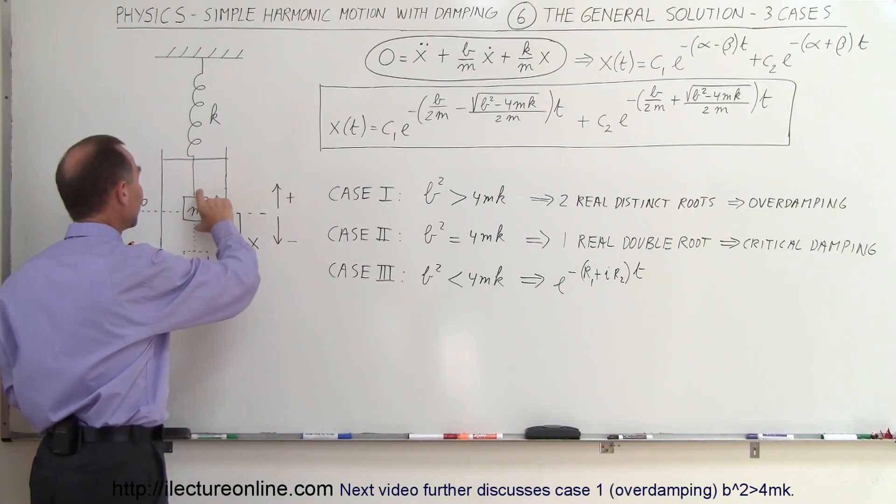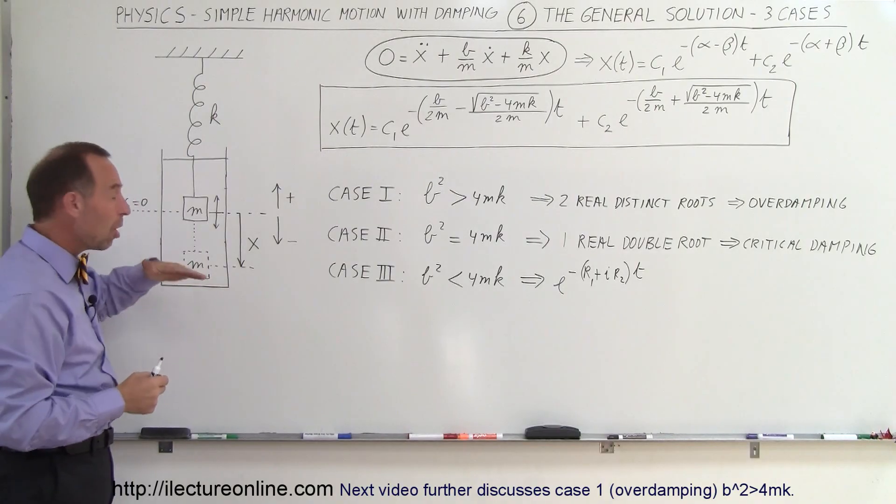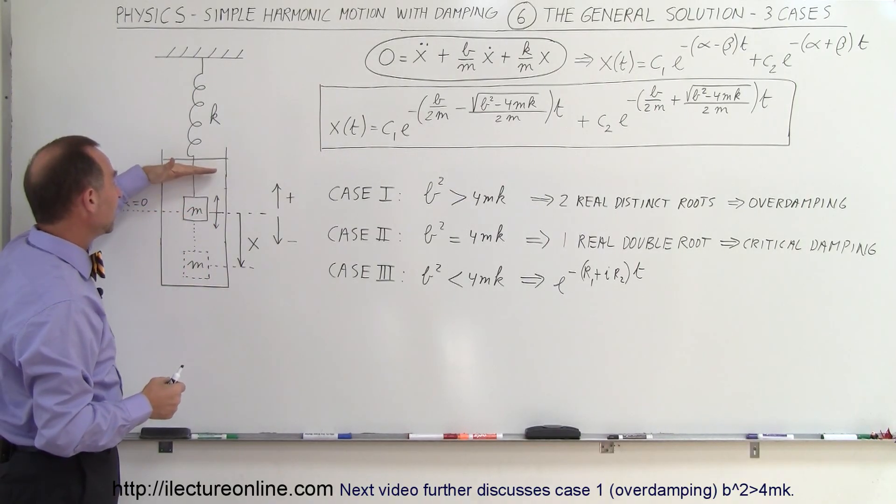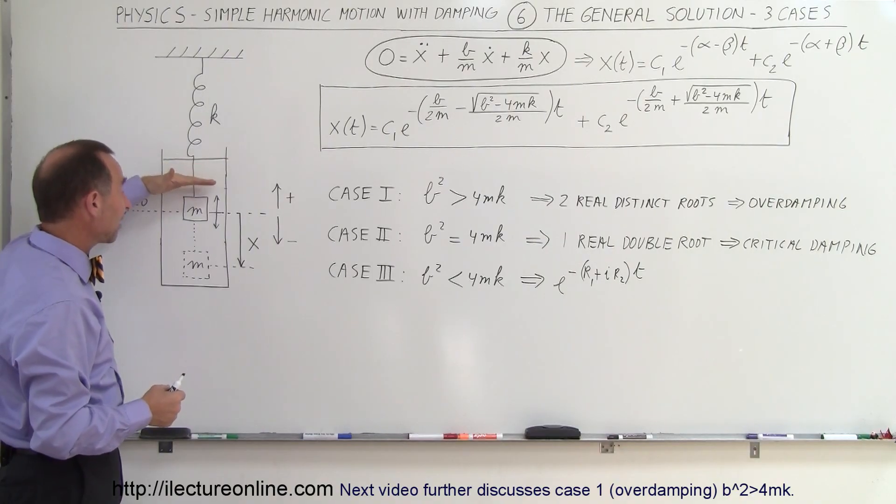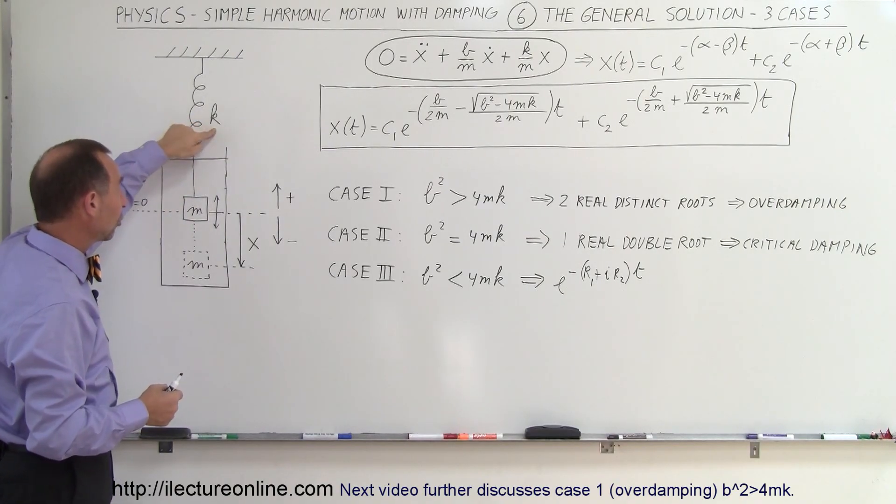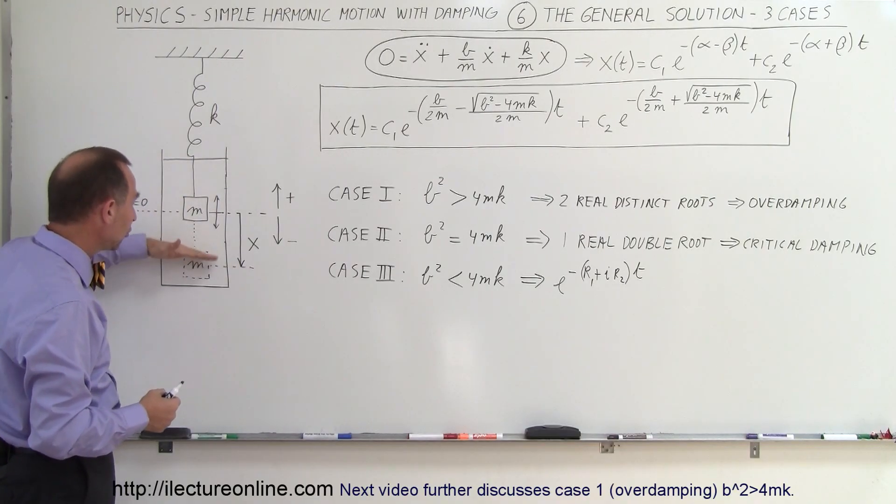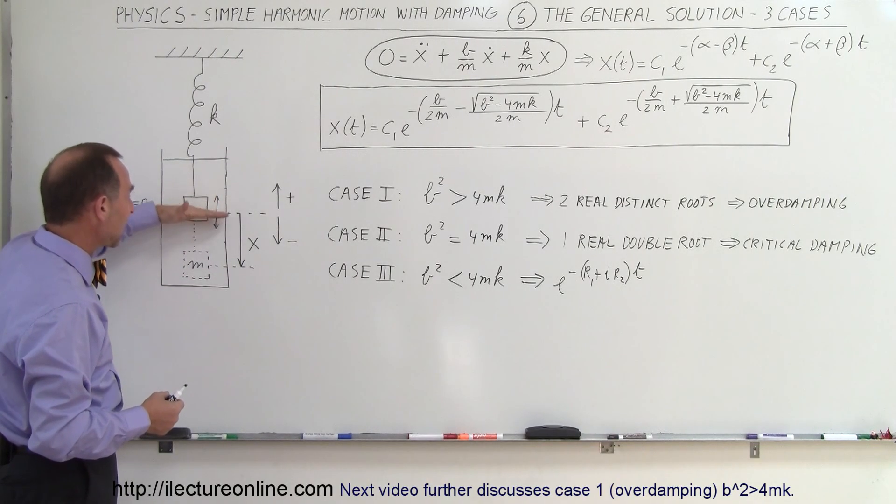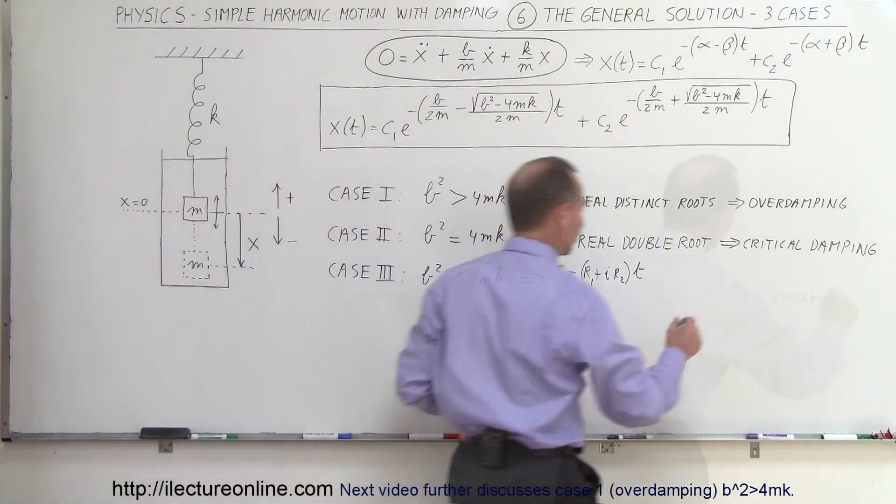What that means is that this damping effect is so small that when you displace from an equilibrium, it will try to go back to the equilibrium point. But since it has so much mass and velocity and the K constant is so large in comparison to B, it will simply overshoot the equilibrium point and just go back and forth and then slowly decay over time and come to zero. So that would be what we call an underdamped case.